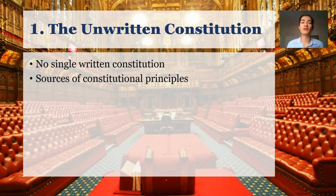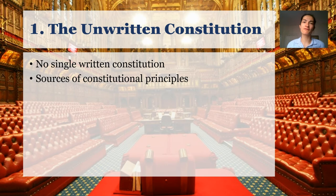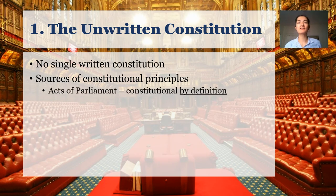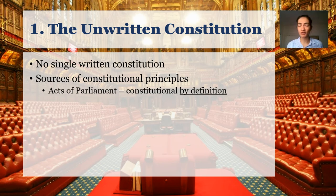Some of those sources are various historical documents and events going as far back as Magna Carta in 1215, which is regarded as the first moment in British history where the monarch agrees that he has to share some degree of decision-making authority with other people in the country. More recently, when we look for constitutional principles, three big places that we tend to find them. Number one: acts of parliament — legislation passed by the duly elected legislature. Acts of parliament are considered by definition constitutional.